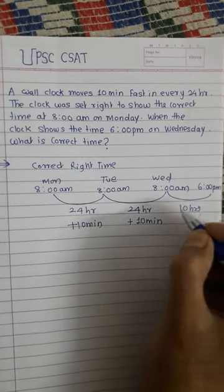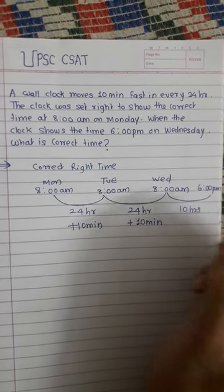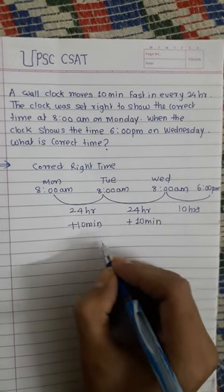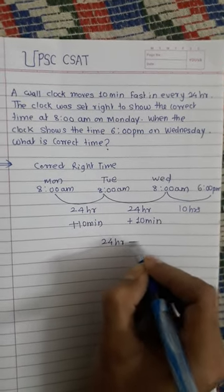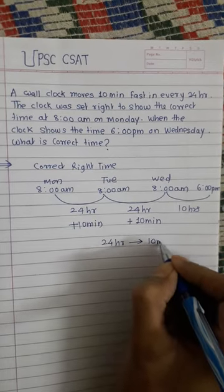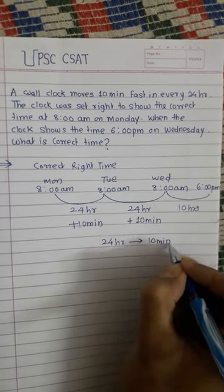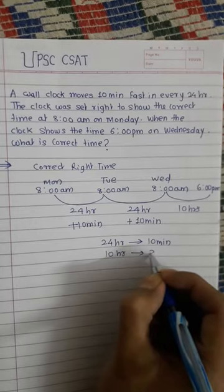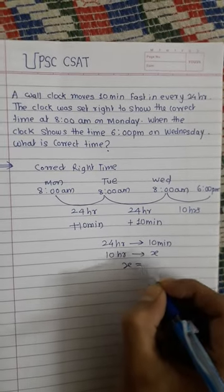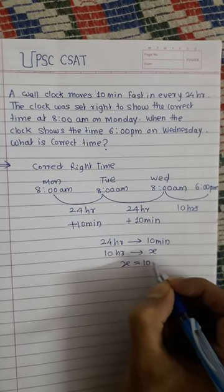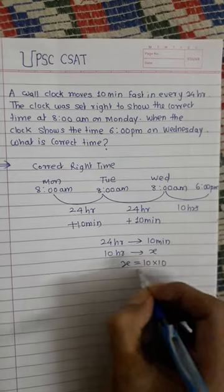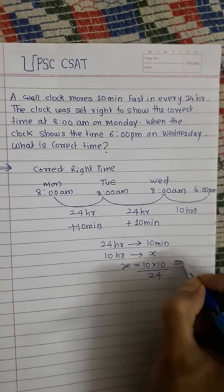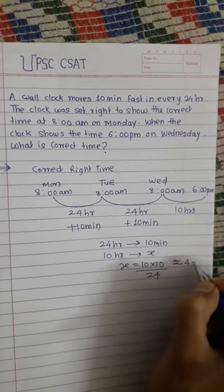Now we want to calculate for the remaining 10 hours, how many minutes the clock will be fast. For 24 hours there is a 10-minute gain, therefore for 10 hours: x = (10 × 10) / 24, which is approximately 4 minutes.